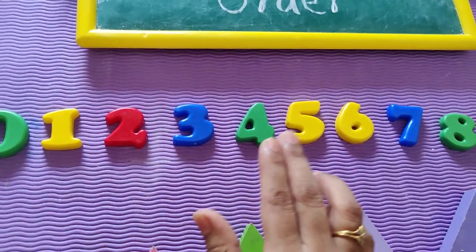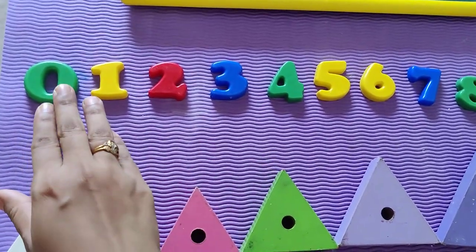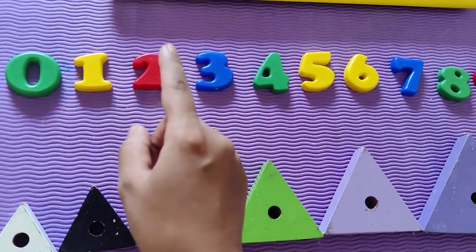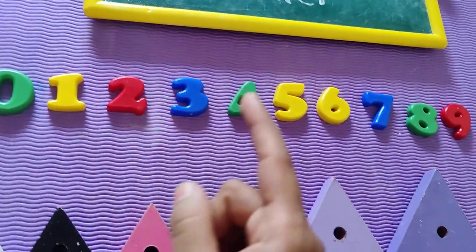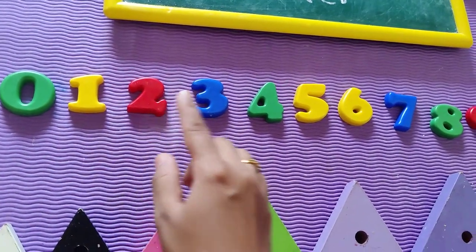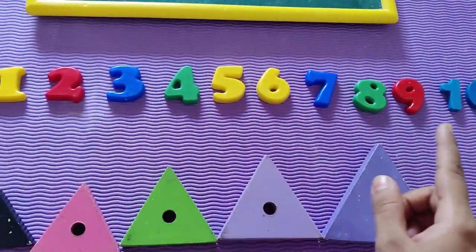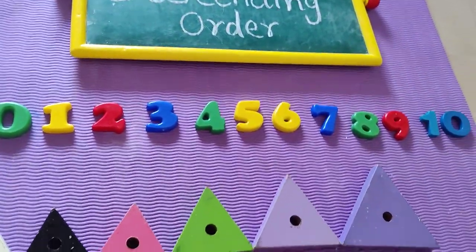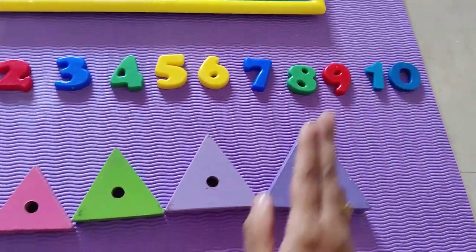So 0, 1, 2, 3, 4, 5, 6, 7, 8, 9, 10. The numbers are arranged from smallest. We all know 0 is the smallest number, and then as we count in serial order, the numbers' value goes on increasing — the number becomes bigger and bigger. 10 is the biggest number here. This order is called ascending order — from smallest to biggest.